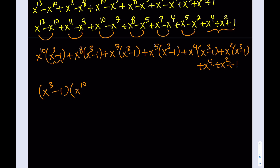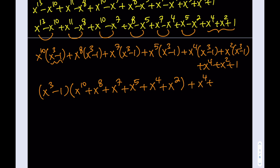I'll take out x cubed minus 1, which is a common factor for many terms here. This gives me x to the 10th plus x to the 8th plus x to the 7th plus x to the 5th plus x to the 4th plus x squared — they skip, they're not consecutive integers, which is kind of interesting. This is how far we can go with that part. Then I just have to attach the other piece, which is the quartic x to the 4th plus x squared plus 1, but we'll take care of that.